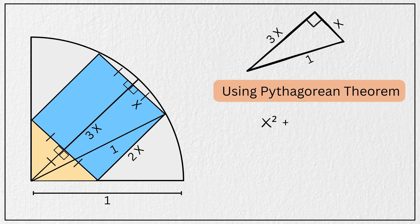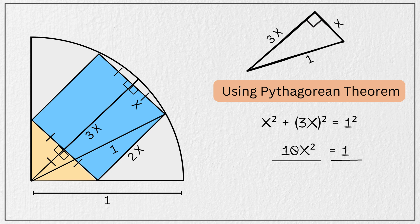We get x squared plus the square of 3x equals 1 squared. Simplifying this we get x squared plus 9x squared equals 1, or 10x squared equals 1. Now dividing both sides by 10.